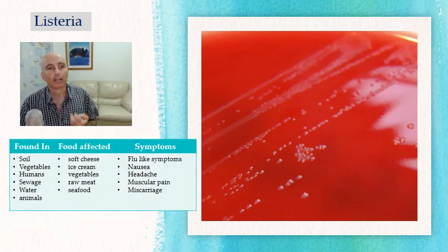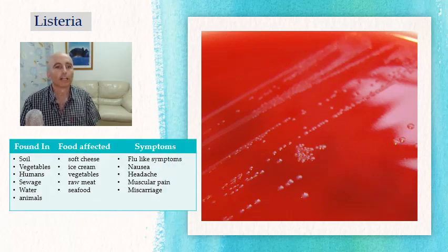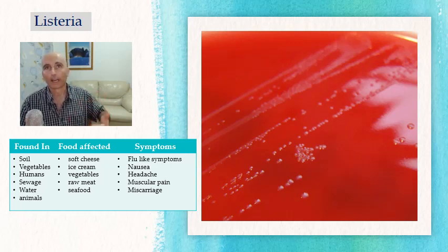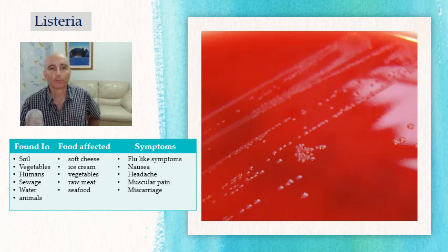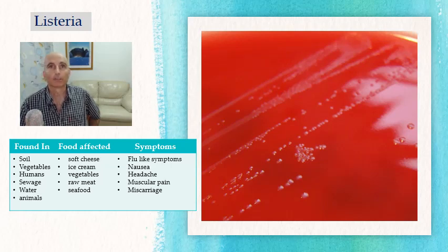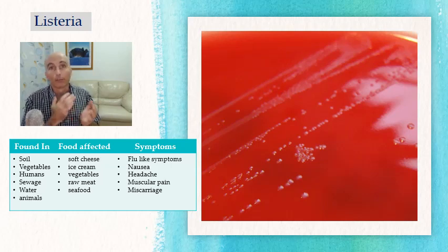Next we have Listeria, which is non-spore-forming and aerobic — meaning it needs oxygen to grow. It's found in soil, vegetables, sewage, water, and animals including humans and cows. Foods affected include soft cheese, ice cream, vegetables, and raw meat. Symptoms include flu-like symptoms, nausea, headaches, muscular pain, and it can cause miscarriage in pregnant women. Prevention: follow strict hygiene, avoid cross-contamination, and always wash your fruit and vegetables.